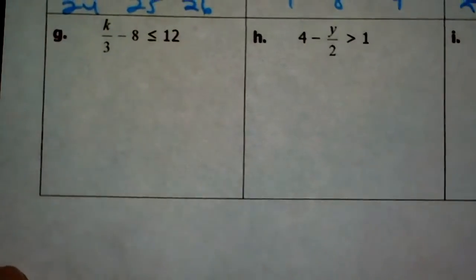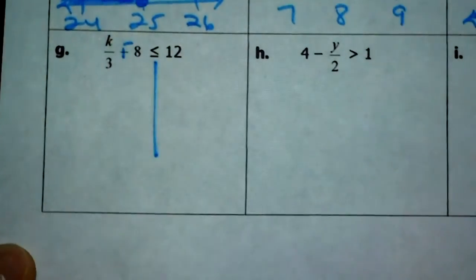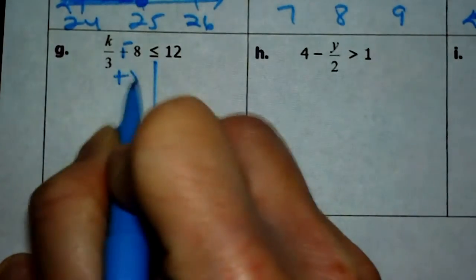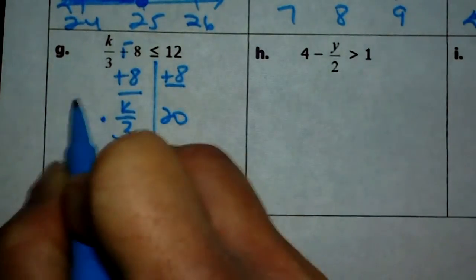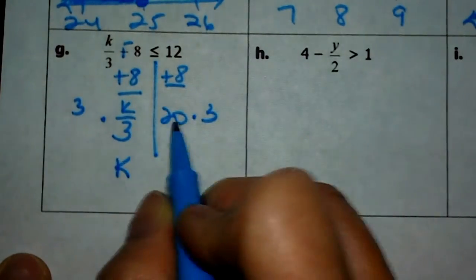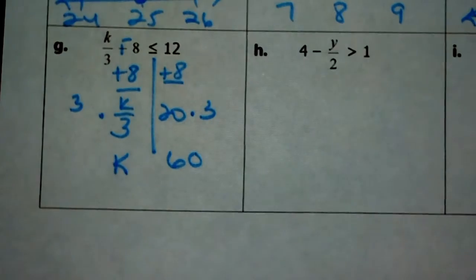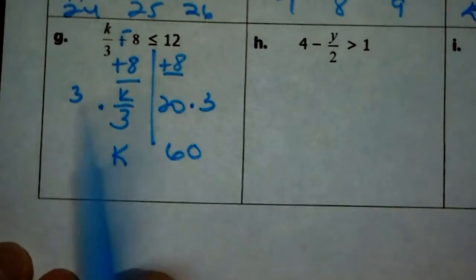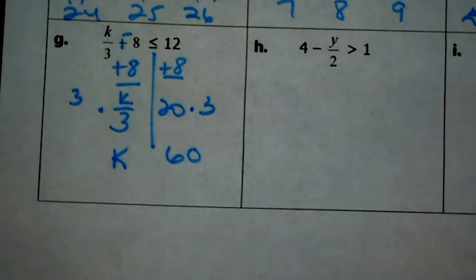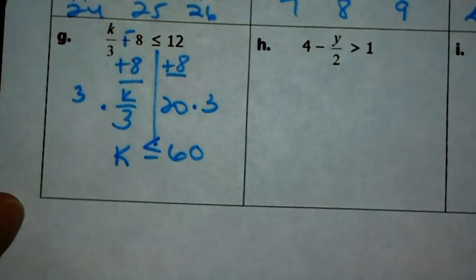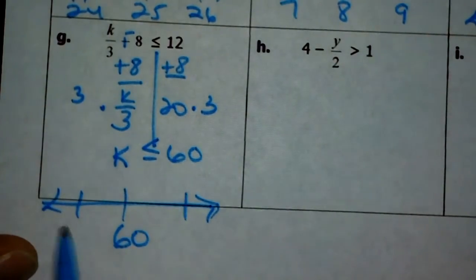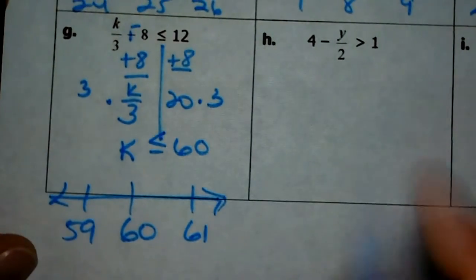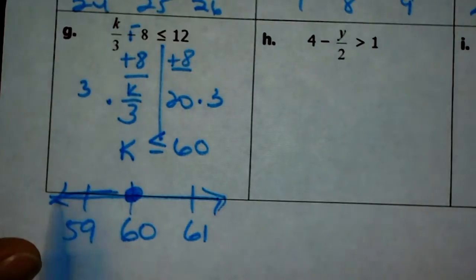Three more! Here I need to get rid of the negative 8 first, so I add a positive 8. k over 3 is left, and 12 plus 8 is 20. I need to now multiply by 3 — I get k on one side and 20 times 3 is 60 on the other. Do I have to change the sign? No. I added a positive 8 and multiplied by a positive 3. So just because you learn to change the sign sometimes does not mean every single one of them changes — only when you multiply or divide by a negative. k is less than or equal to 60. I put 60 in the center, closed circle, shading to the left.